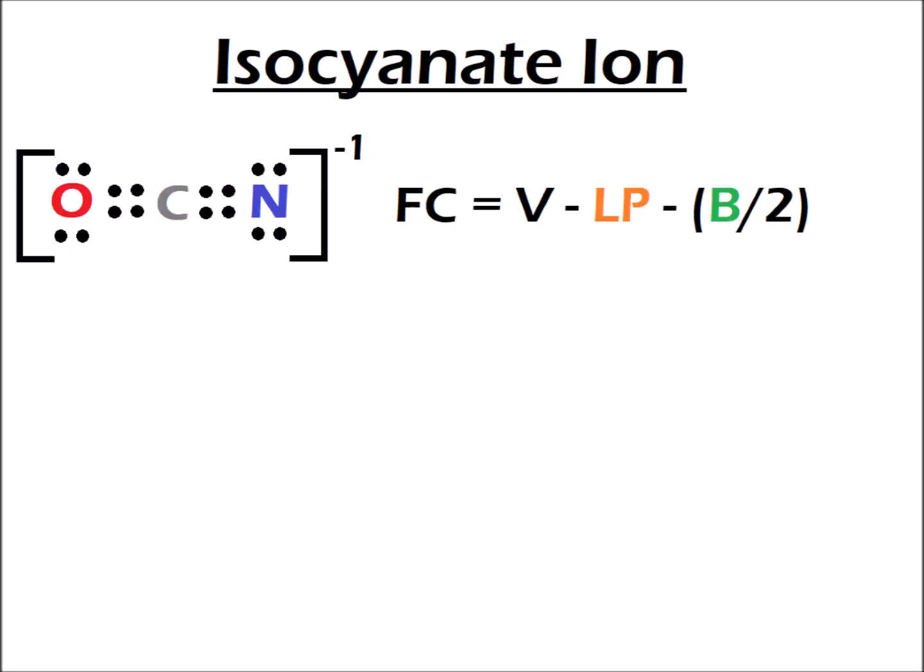First, we have the isocyanate ion, and we can calculate the formal charge FC. It is the number of valence electrons V, minus the number of lone pair electrons LP, minus the number of bonding electrons B divided by 2. One thing to keep in mind is that the number of valence electrons depends only on the element and not the particular molecule, so for each element it will be a fixed number that we can get from the periodic table.